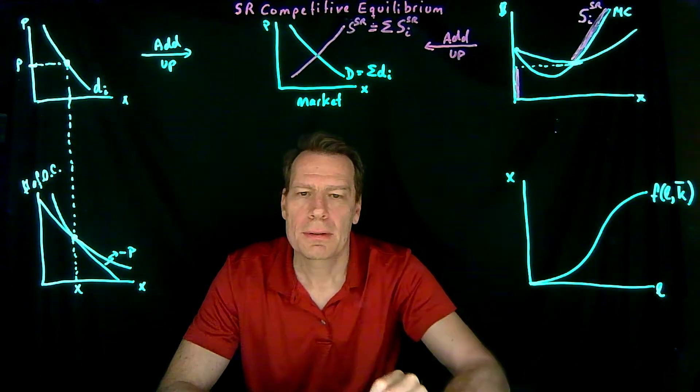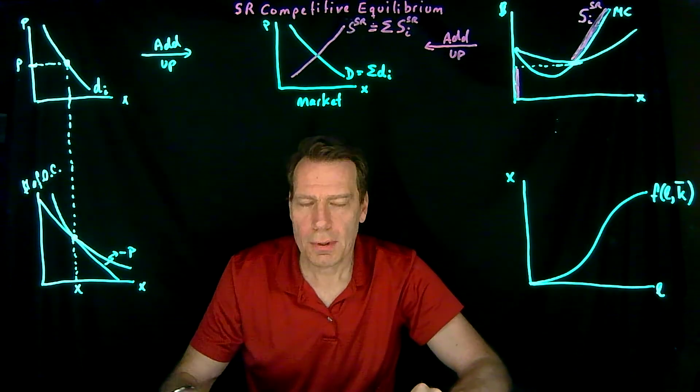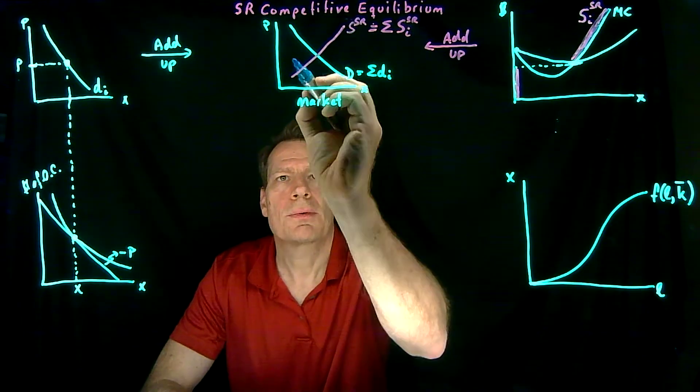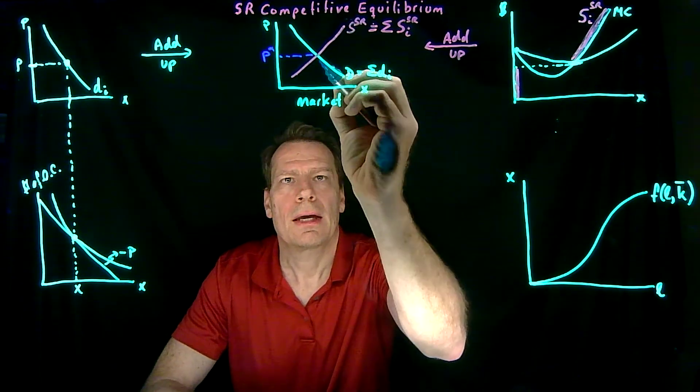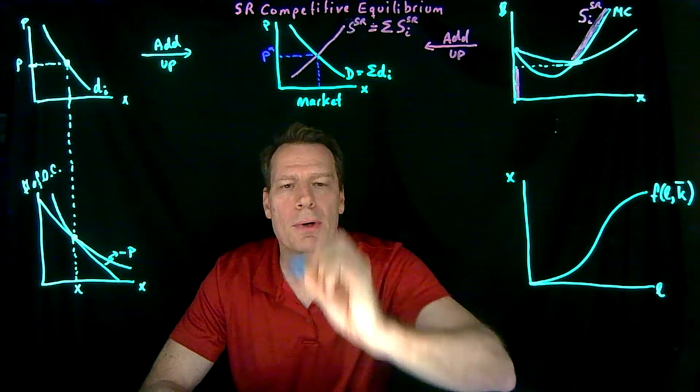Now we have a market picture where we have an equilibrium price that emerges. This equilibrium price at which this much will be produced in the market.